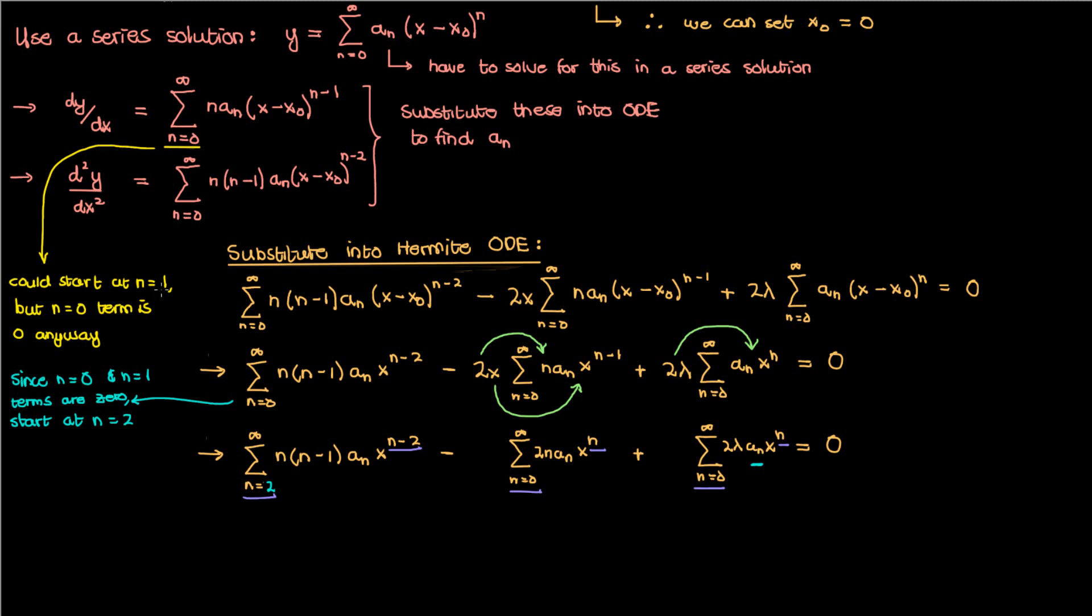That is, unless we change up this first summation that looks out of place to have an x to the n instead of an x to the n minus 2. And the best way to do that is to let some other dummy index m equal n minus 2. In that case our n is equal to m plus 2 and instead of starting at n equals 2, we can start our summation at m equals 0. And when we convert the summation in the index n to a summation in this new index m, we get the sum from m equals 0 to infinity of (m+2)(m+1)a_{m+2}x^m.